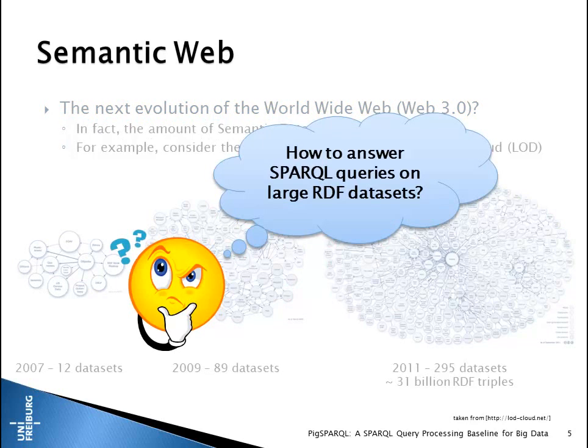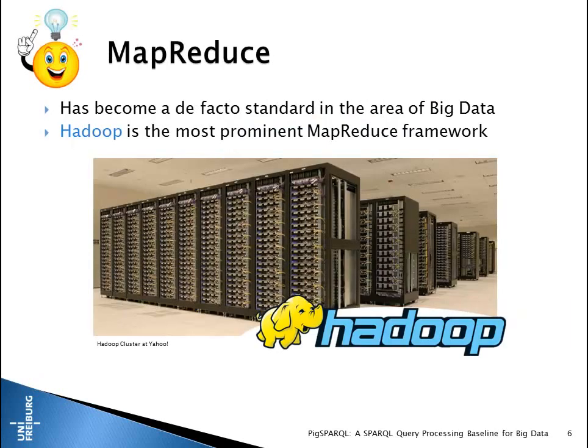This comprises a total of more than 31 billion RDF triples. The question that arises from this is how to process these RDF data at scale — especially how to answer SPARQL queries, as SPARQL is the standard query language for RDF.